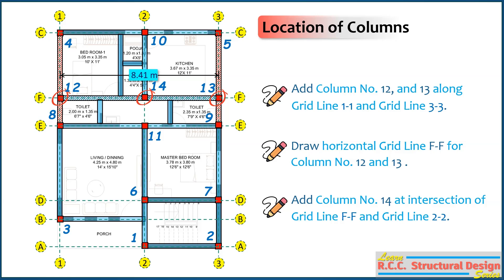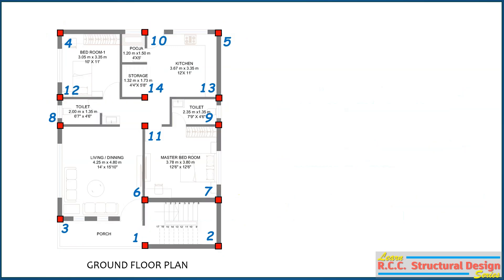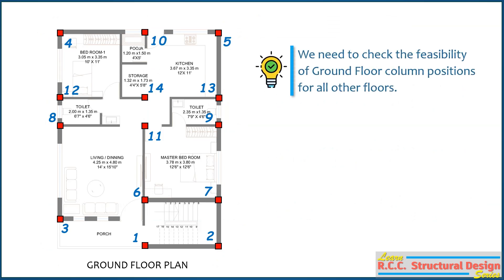Here, the maximum spacing between column numbers 3 and 8 is around 5m. At this stage, the column placement with respect to the ground floor plan can be acceptable. For a multi-storey building, we need to check the feasibility of ground floor column positions for all other floors as well. As the building is two-storied, we have to check the feasibility of the ground floor column positions for the first floor.